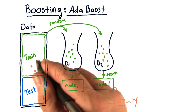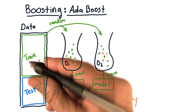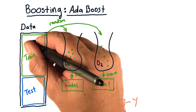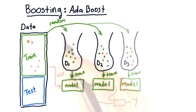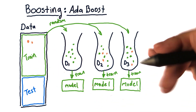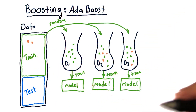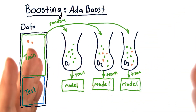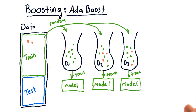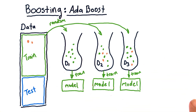Maybe this time these points got modeled better, but there were some other ones up here that weren't as good. And thus we build our next bag and our next model. We just continue this over and over again, up until M, or the total number of bags we're going to be using.